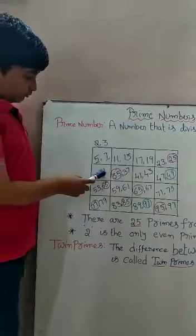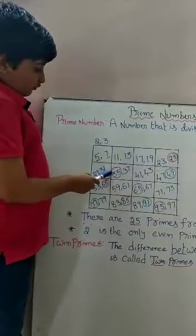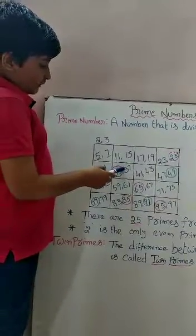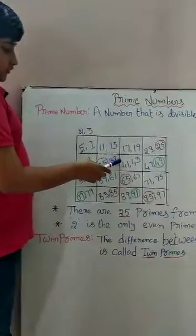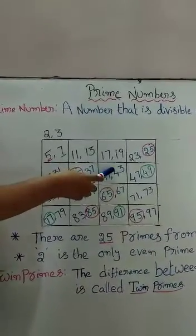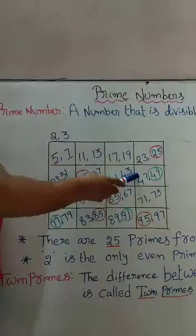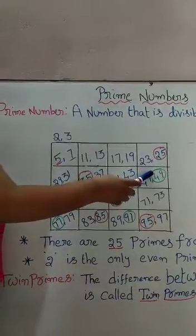29 plus 2 is 31. 31 plus 4 is 35. 35 plus 2 is 37. 37 plus 4 is 41. 41 plus 2 is 43. 43 plus 4 is 47. 47 plus 2 is 49.